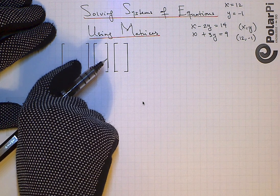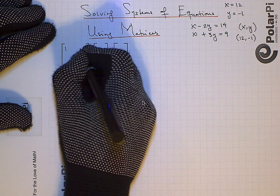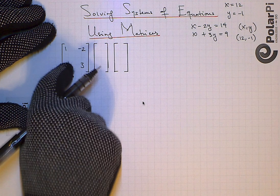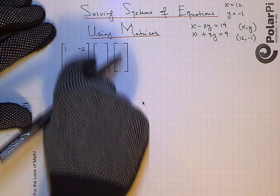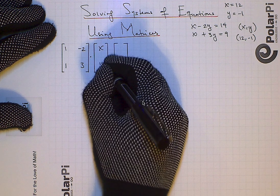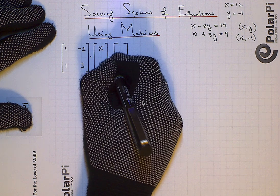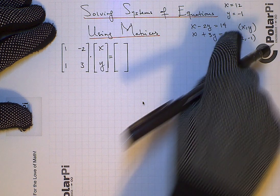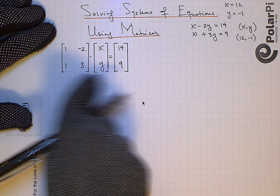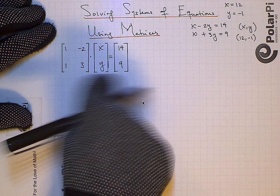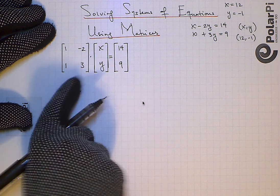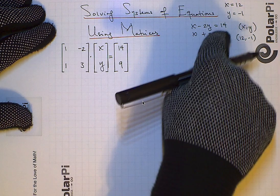First, we'll have a matrix of coefficients: one, negative two, one, and three. These are the coefficients of x — which are one and one — and then the y's are negative two and three. Then we'll have a matrix of variables, which is x and y. We say that this equals the matrix of the constants on the right side, so 14 and nine. If you do matrix multiplication on this matrix equation right here, you should be able to return to these two original equations. So just from knowing matrix multiplication, you should understand that this matrix form is identical to that system.